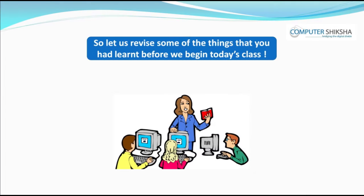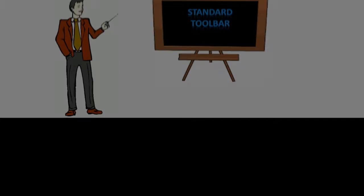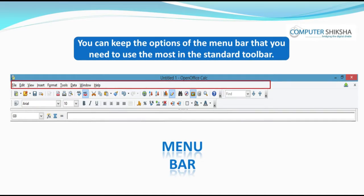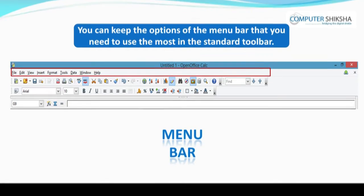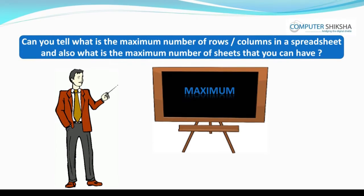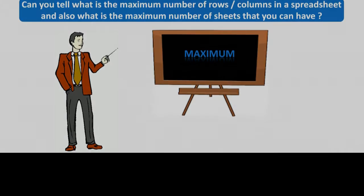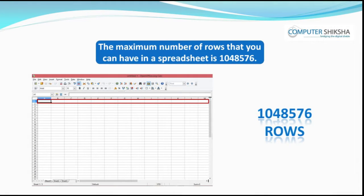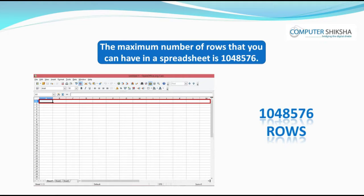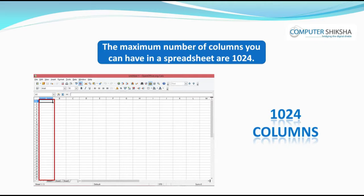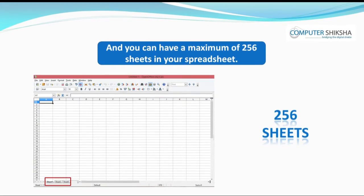Let us revise some of the things you had learned before we begin today's class. Which options can you keep in the standard toolbar? You can keep the options of the menu bar that you need to use the most in the standard toolbar. The maximum number of rows in a spreadsheet is 10,48,576. The maximum number of columns is 1024, and you can have a maximum of 256 sheets in your spreadsheet.